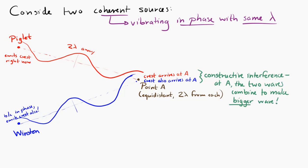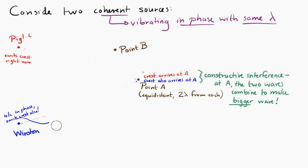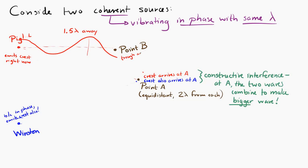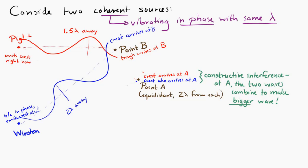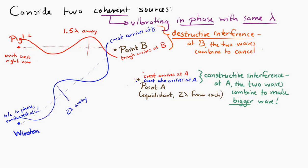Now let's consider a point B, which is one and a half wavelengths away from Piglet and two wavelengths away from Winston. If Piglet is sending out a crest at that moment, then one and a half wavelengths away, a trough is arriving at B from Piglet. Winston is sending out a crest, and two wavelengths away at B, a crest is being received from Winston. So at B we're receiving a trough from Piglet and a crest from Winston — that gives us destructive interference, because the crest and the trough partially cancel each other out.